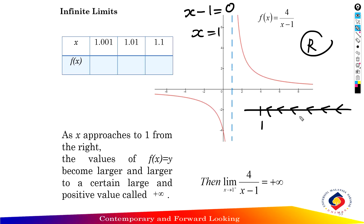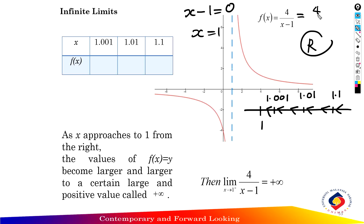We substitute values of x really close to 1 from the right-hand side. The nearest values from the right are: first value 1.1, second value 1.01, and third value 1.001. For x = 1.1, we substitute into the function: 4 over (1.1 minus 1), and f(x) equals 40.